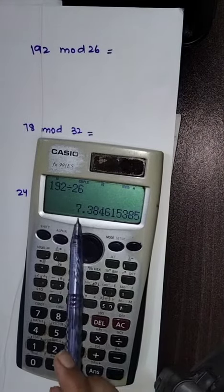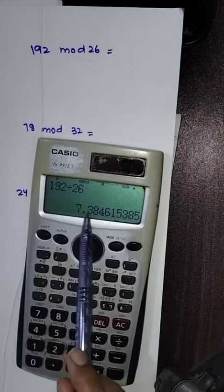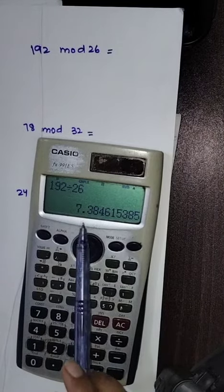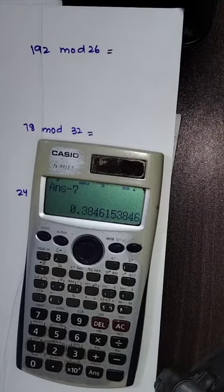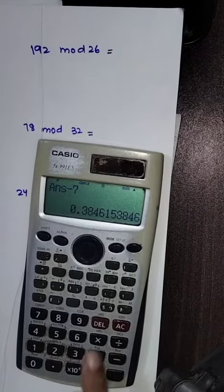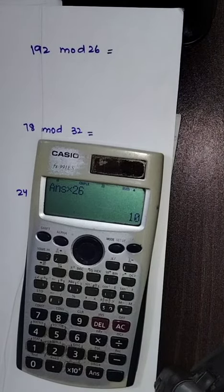Now we will subtract this value 7.38 from the value before the decimal point. So 7.38 minus 7 equals 0.38. Now we will multiply 0.38 with the mod value, which is 26. So 192 mod 26 is 10.